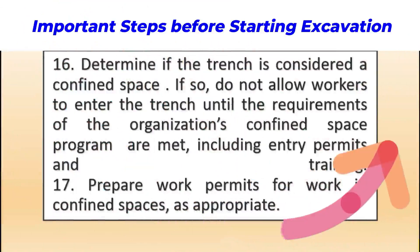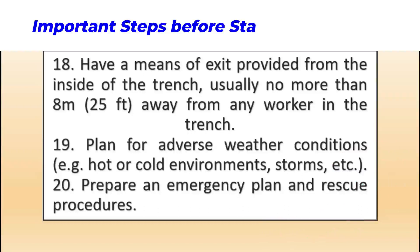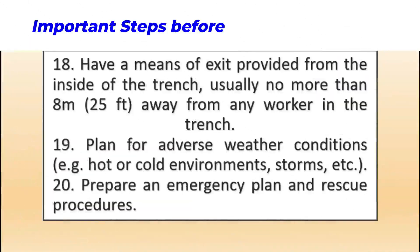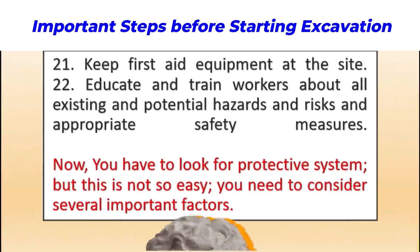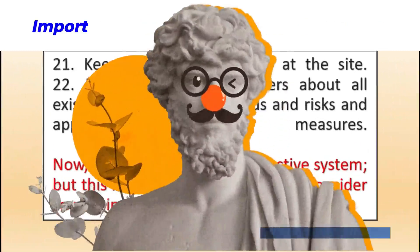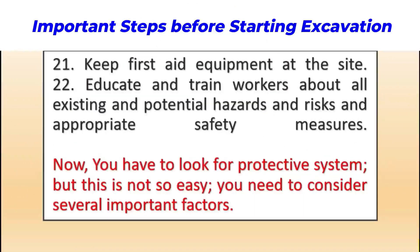Step seventeen: prepare work permits for work in confined spaces as appropriate. Step eighteen: have a means of exit provided from inside the trench, usually no more than 8 meters or 25 feet away from any worker. Step nineteen: plan for adverse weather conditions, such as hot or cold environments, storms, or rain. Step twenty: prepare an emergency plan and rescue procedures. Step twenty-one: keep first aid equipment and a first aider on site.